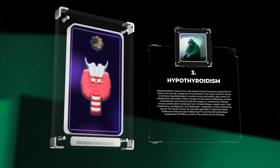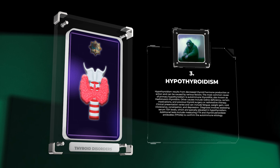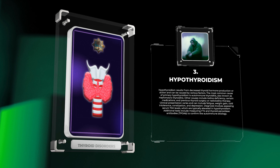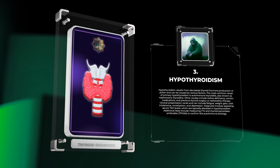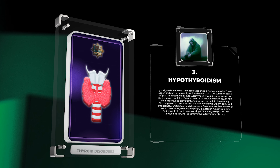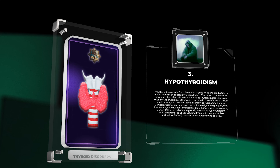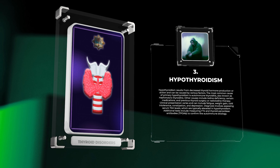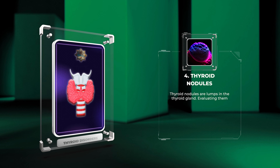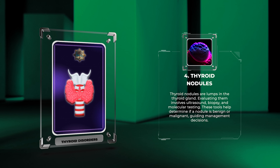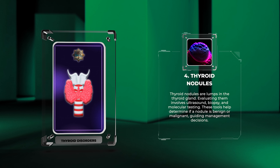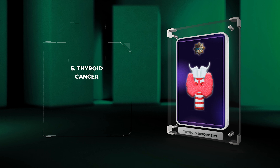Hypothyroidism results from decreased thyroid hormone production or action and can be caused by various factors. The most common cause of primary hypothyroidism is autoimmune thyroiditis, also known as Hashimoto's thyroiditis. Other causes include iodine deficiency, certain medications, and previous thyroid surgery or radioiodine therapy. Clinical presentation can include fatigue, weight gain, cold intolerance, constipation, and depression. Diagnosis involves assessing serum TSH levels, which are typically elevated, as well as measuring FT4 and thyroid peroxidase antibodies (TPOAb) to confirm autoimmune etiology.